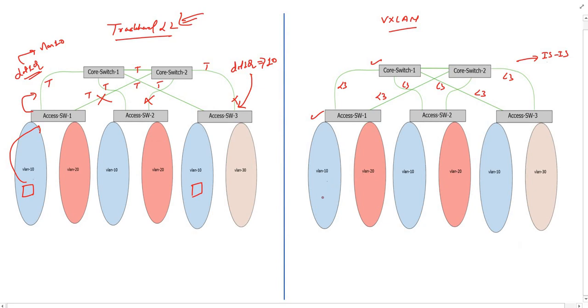Now, devices in the same VLAN on different switches will not be able to talk as layer 2 frames are not forwarded on layer 3 links. Hence, we cannot stretch the VLAN.